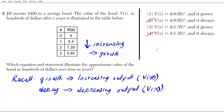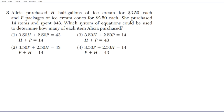Let's take a look at question 3. Alicia purchases h half-gallons of ice cream for $3.50 each and p packages of ice cream cones for $2.50 each. She purchased 14 items and spent $43. Which system of equations could be used to determine how many of each item Alicia purchased? Before we start, let's review how to compute total cost.